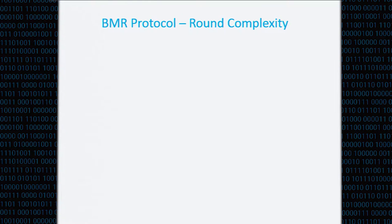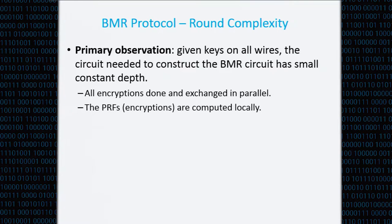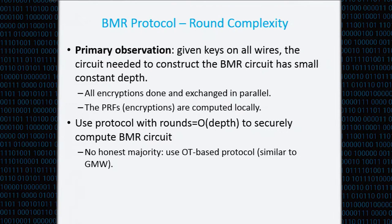The BMR protocol has constant rounds. The primary observation is that once you have all the keys, you can do all the encryptions in parallel and communicate them in parallel; the encryptions themselves are computed only locally, which is important, as otherwise the depth would be significantly higher. To construct the BMR circuit we use a sub-protocol. Without an honest majority, you can use an OT-based protocol similar to GMW; with an honest majority, you might use an information-theoretic protocol such as BGW.